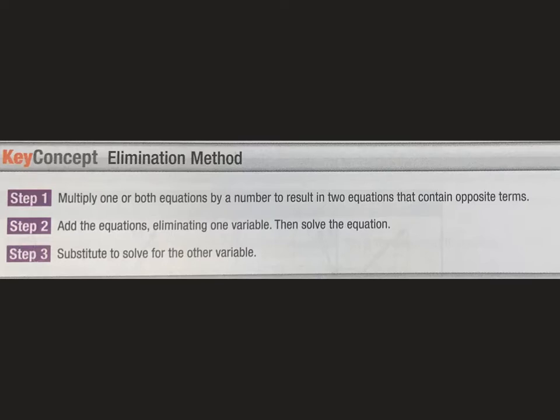So we're going to multiply either one or both of our equations by a number to result in two equations that contain opposite terms. So that means that they're going to be the same number. So an example of an opposite term would be like 2x and negative 2x. You can see how they have opposite coefficients.